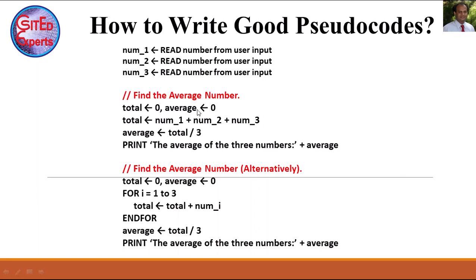I will also need an average variable, assigned to zero. For the total variable it is required to assign zero initially; otherwise it may get a garbage value and your total may not be calculated correctly. Once total is zero, I reassign: total = num_1 + num_2 + num_3. Then average = total / 3. Finally I print: 'The average of three numbers = average'.